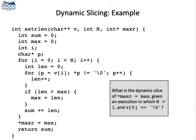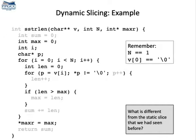Let's clarify the definition of dynamic slices with an example. Consider again the assignment pointer max, or equals max, down here in the program. Imagine that our function receives n equals one and v of zero equals zero. Which other statements in this program would, under these circumstances, contribute to the value assigned to pointer max r? Here you have the instructions in boldface.